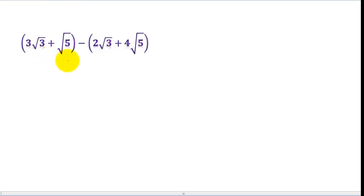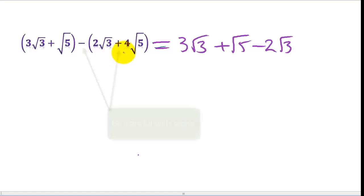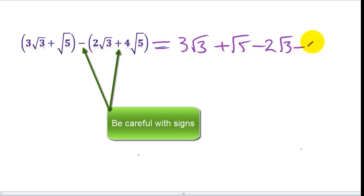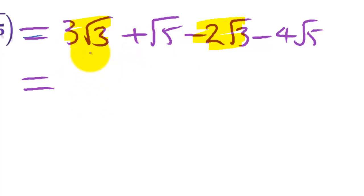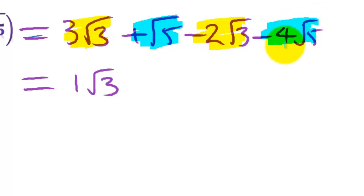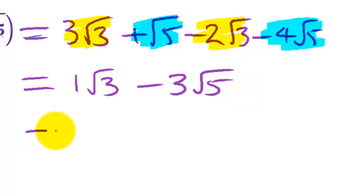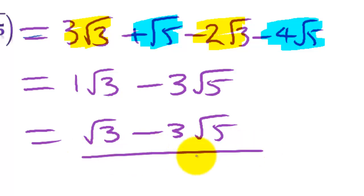In this one, we're going to do exactly the same again. Expanding the brackets gives us root 3 times root 3 plus root 5 minus 2 times root 3 minus 4 times root 5. That gives us 3, plus root 5, minus 2 root 3, minus 4 root 5. Collecting like terms: 3 root 3 minus 2 root 3 is 1 lot of root 3. And root 5 minus 4 root 5 is minus 3 root 5. Because these square roots are different numbers, we can't simplify further.